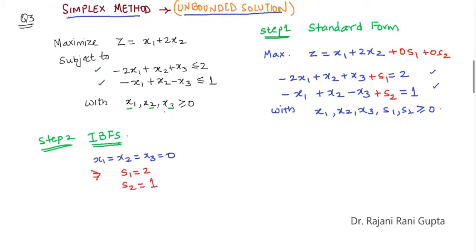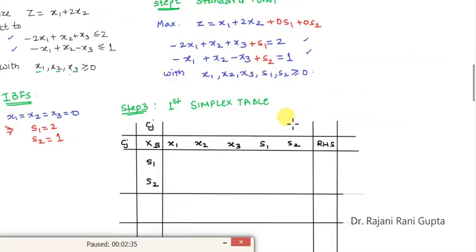Now we will move to step 3. Step 3 is forming the first simplex table. So in this table, now we enter the cost. Cost comes from the objective function. The coefficient of x1 is 1. Coefficient of x2 is 2. Now we see there is no x3. So it means its coefficient is 0. Coefficient of s1 is 0. Coefficient of s2 is 0.